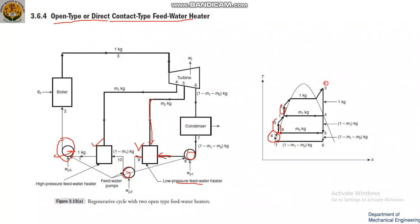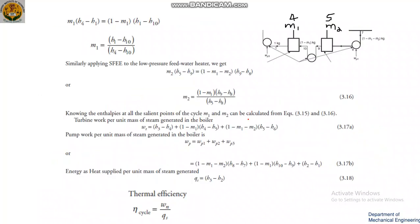From the feed water heater, you are left with only a fraction (1 minus M1 minus M2) of the stream. Finally, M1 minus M2 amount of steam will be condensed. Now we will derive the equations for M1 and M2.